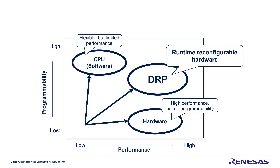Now, what is the DRP? The DRP combines software reprogrammability with hardware speed. It has dynamically reconfigurable processor cores that are programmable in C language and are directly connected to the external I/O ports so that the ports can be controlled as desired.